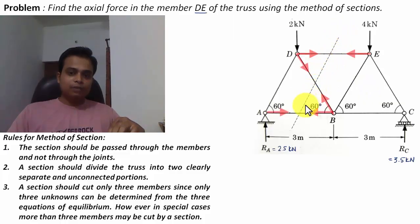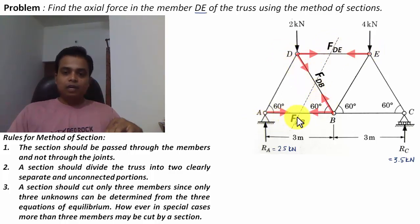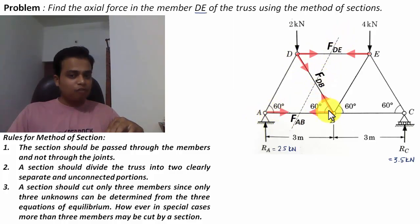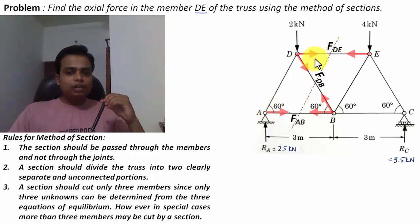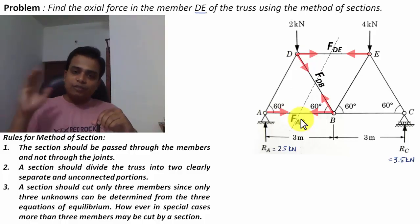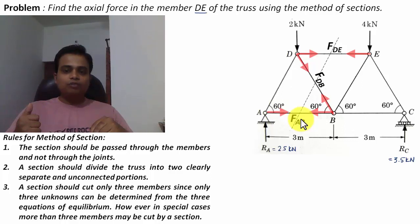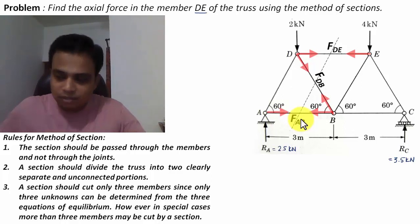Rule Number Three is of utmost importance. The members being cut have forces — F_DE, F_DB, and F_AB — and these forces are tensile in nature, approaching the section line from both directions. We have three unknowns: F_DE, F_DB, and F_AB. To solve three unknowns we need three equations: summation of Fx = 0, summation of Fy = 0, and summation of moments = 0.